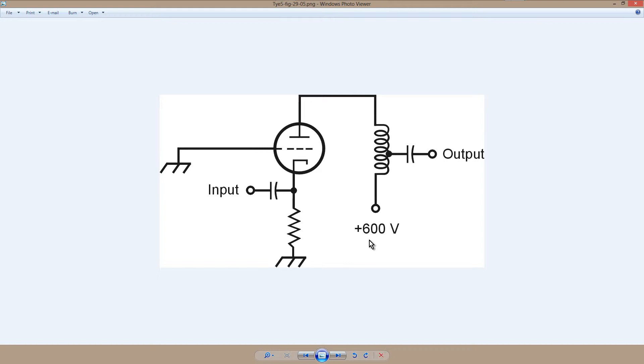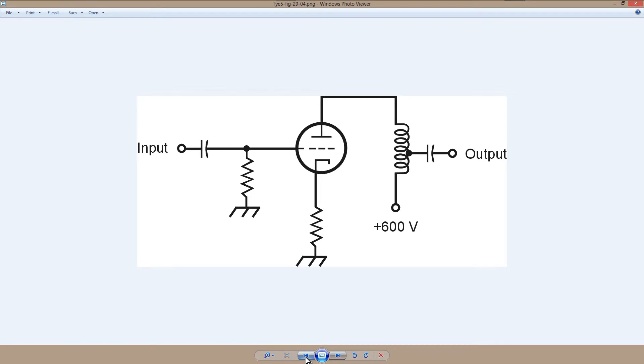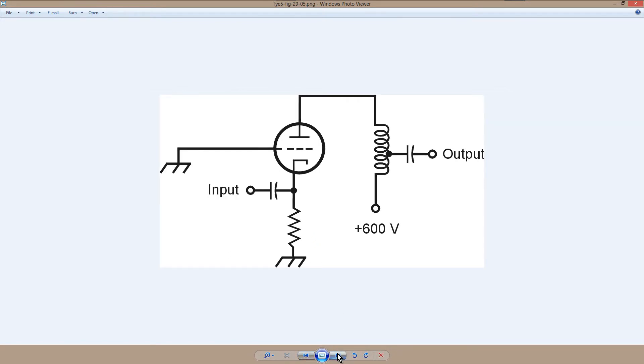Here's a grounded grid configuration. Now this is often used in radio frequency power amplifiers even today, ham radio. So linear amplifiers will employ this technique. We apply the input to the cathode rather than to the grid. We still take the output from the plate circuit in the same way as we do with the grounded cathode. Sometimes this is called common cathode, common grid. You won't hear that terribly often. It's more often referred to as grounded grid. This is figure 29-5 from Teach Yourself Electricity and Electronics, 5th edition.